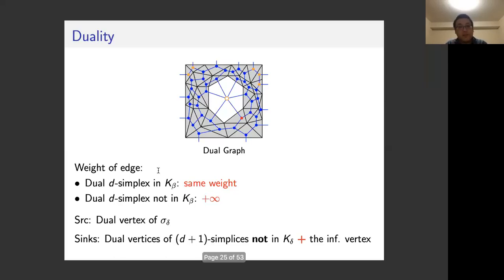For the source and sink: we let the source be the vertex dual to sigma_delta, the killer simplex added when the feature is killed. In this figure, sigma_delta is this triangle, so the red vertex dual to this triangle is the source. For the sink, we include all vertices dual to D-simplices not in K_delta, and also include the dummy vertex. In this example, the triangles missing in K_delta have their dual vertices (the orange ones) in the sink, along with the dummy vertex.